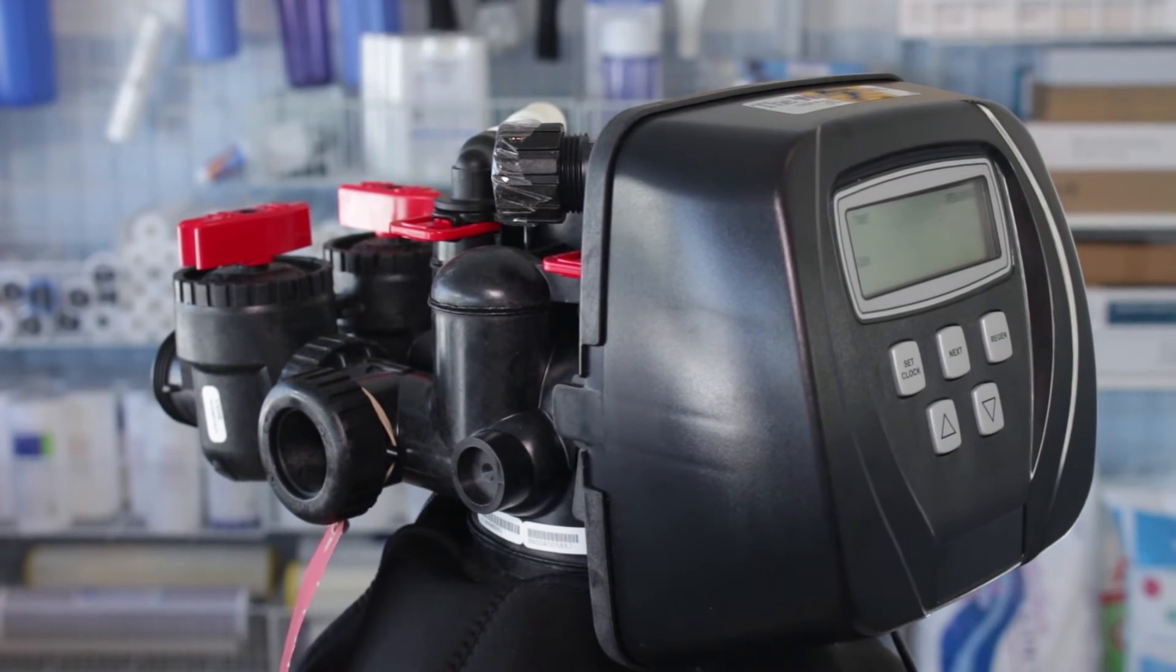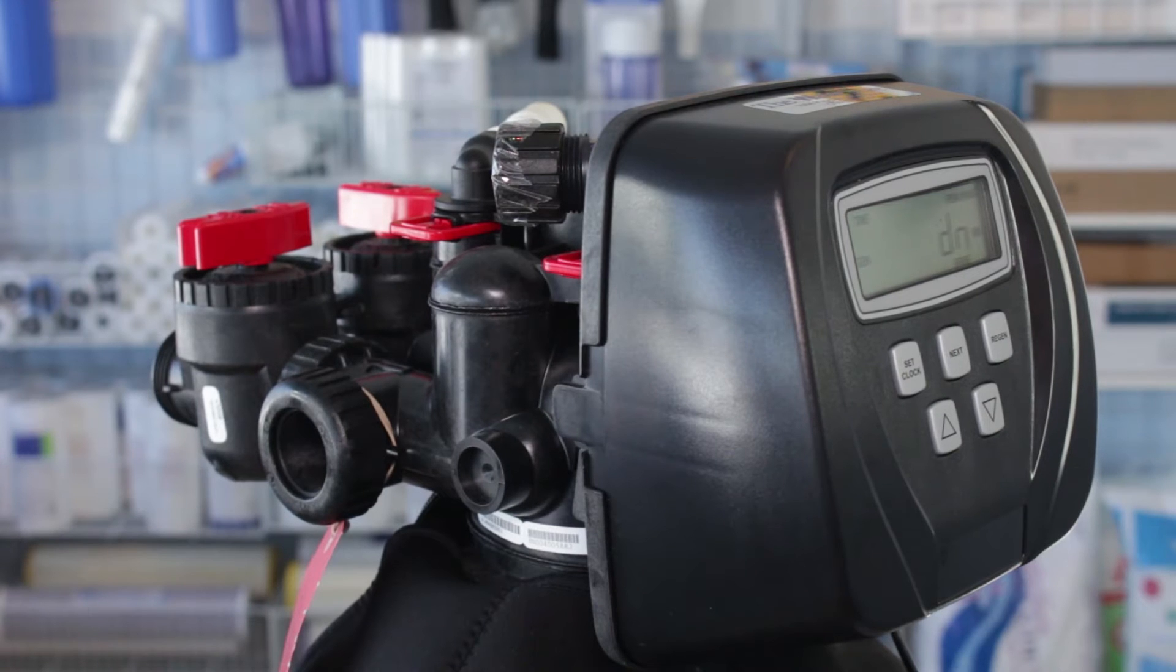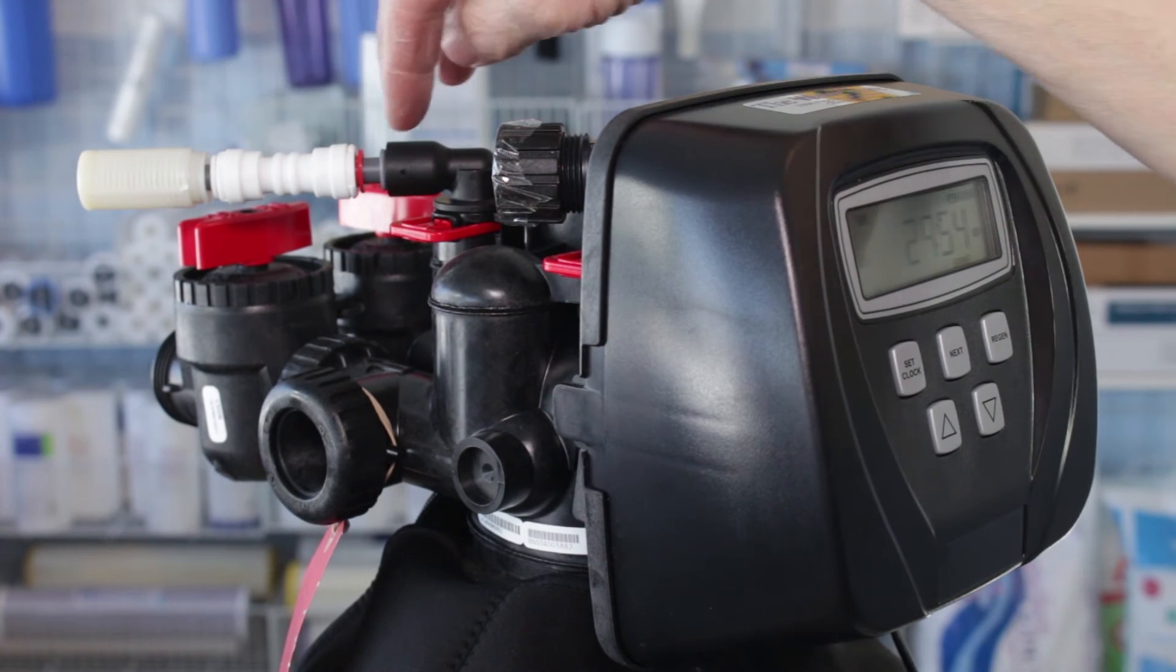Once you're at that stage you press the regen button again and now it's going to go into the brine cycle. Now for an FOB or FOC, it's not actually brine that's being drawn in—it's air, and the air is drawn in through here. This is the air inlet.